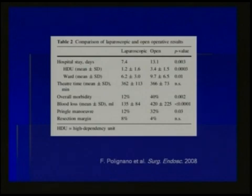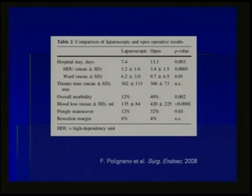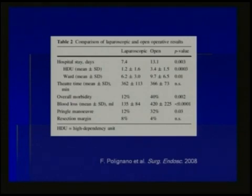They compared laparoscopic to open, and you can see the length of stay, the ICU stay, the ward stay — those were all statistically significant. Interestingly, the OR time was not different between open and laparoscopic. Then they looked at things like morbidity and blood loss, what percent used the Pringle maneuver, and resection margins.